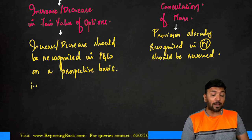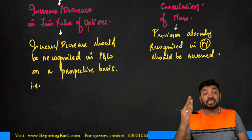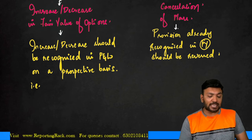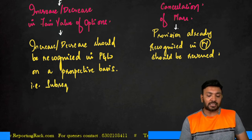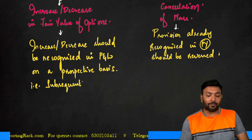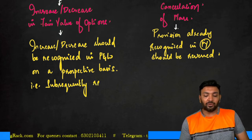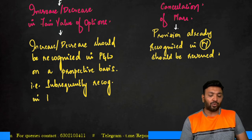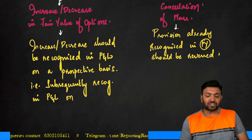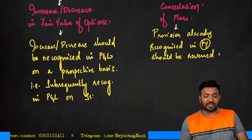What do we mean by prospective basis? It means that subsequent provision recognition is recognized in P&L on a straight-line basis going forward from the point of modification.